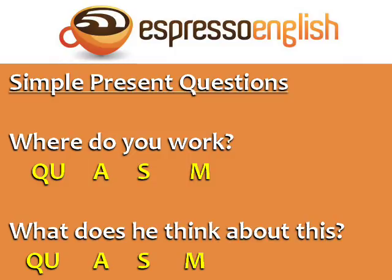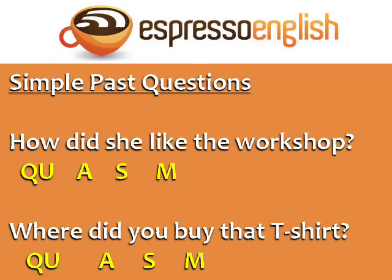Let's look at some examples. Simple present questions: 'Where do you work?' Here, 'where' is the question word, 'do' is the auxiliary verb, 'you' is the subject, and 'work' is the main verb. Another example: 'What does he think about this?' In this case the auxiliary verb is 'does' because the subject is 'he'.